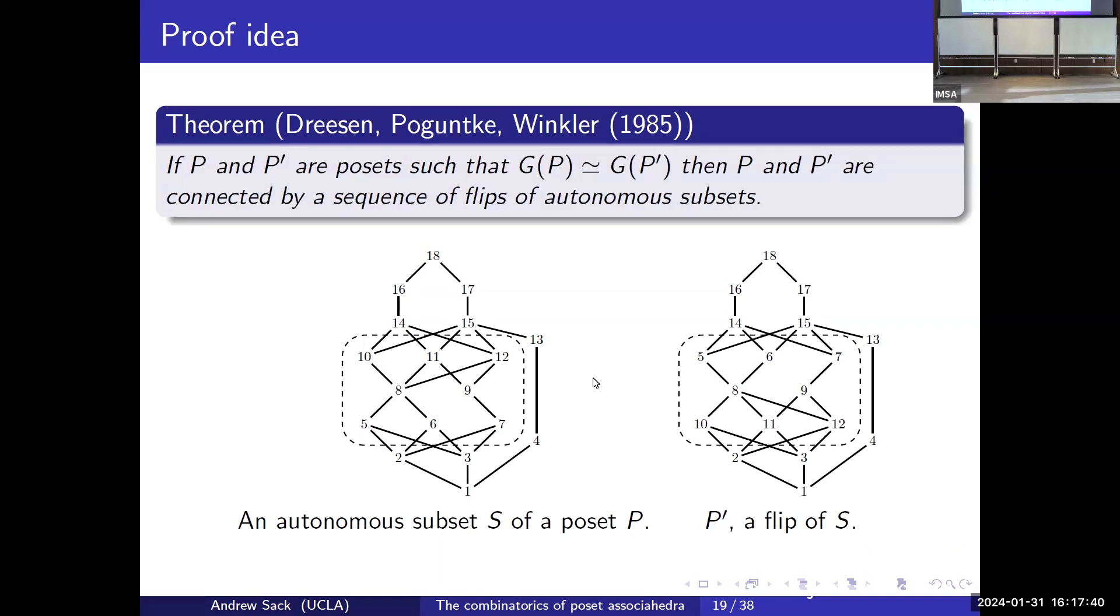We define what are called flips, and a flip just means turning that subset upside down. A way to think about this technical condition is that autonomous subsets are exactly the subsets for which it makes sense to define what flipping is unambiguously. There's a fantastic theorem about comparability graphs which says that if two posets have isomorphic comparability graphs, then the posets are connected by a sequence of flips of autonomous subsets. What this theorem lets us do is it says if I want to show that something is a comparability invariant, I only have to show that the property is invariant under flips of autonomous subsets.